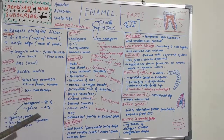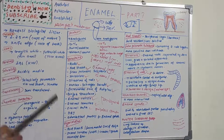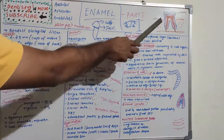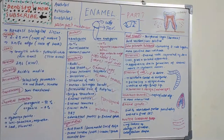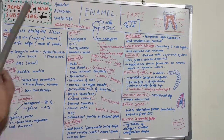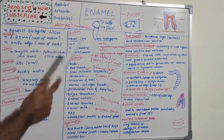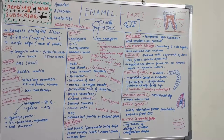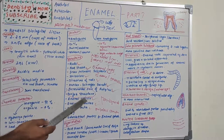The secondary enamel cuticle covers the cervical area of enamel with a thickness up to 10 micrometers, is continuous with cementum, and is probably of mesodermal origin. This is the key difference between the primary enamel cuticle (Nasmyth's membrane) and the secondary enamel cuticle.